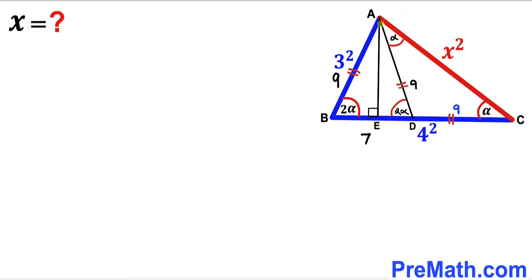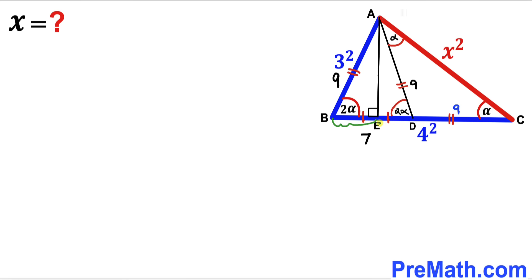In this next step I have dropped perpendicular AE onto side BD. Since triangle ABD is isosceles, this perpendicular bisects BD into two equal parts. So BE equals 7/2 and ED equals 7/2. I will label the perpendicular AE as height h.